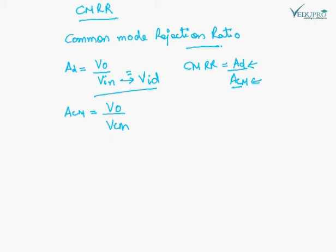AD is given by this and ACM is given by this. CMRR for an ideal OPAMP should be infinite. So in a practical OPAMP also the value of CMRR should be as high as possible. When both the inputs are common this rejection should be as high as possible.